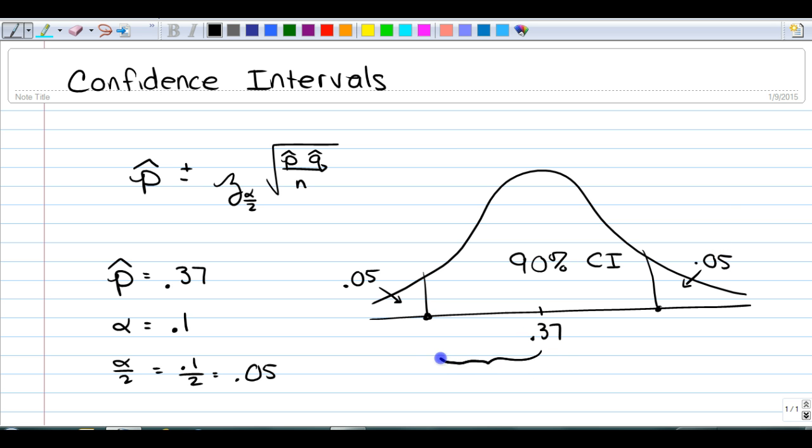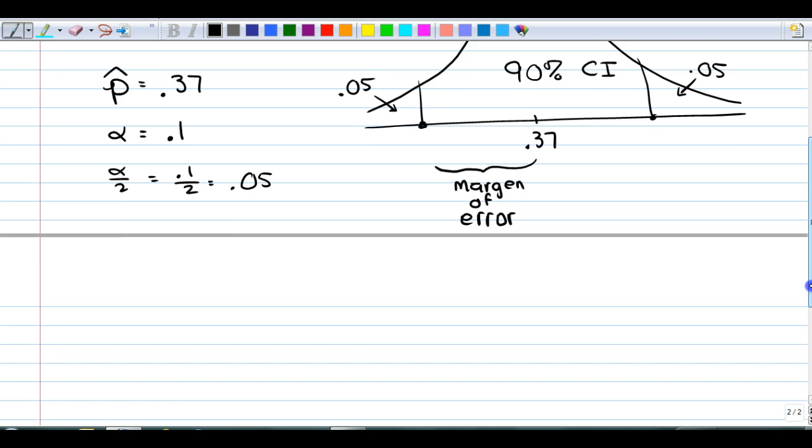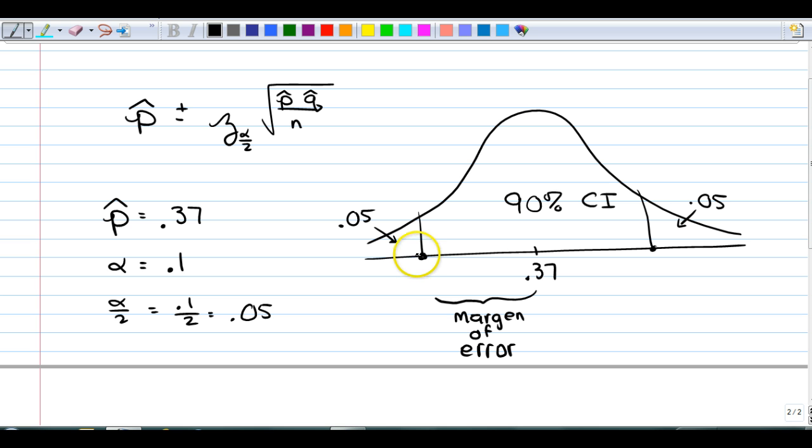This distance is the margin of error. So how do we find those values? Well, we could find this value as a z-score and then multiply it by p-hat times q-hat divided by n. Or, we could let the calculator do it for us.